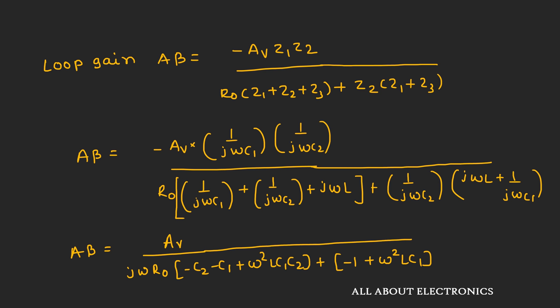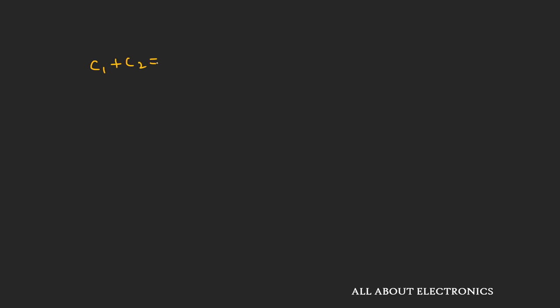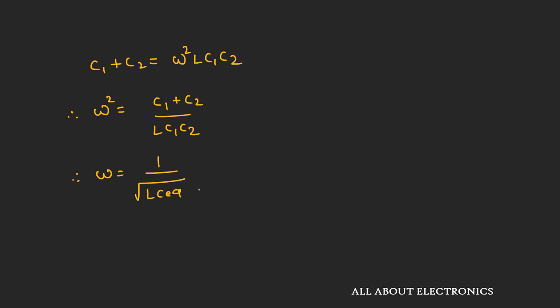To achieve zero degrees of phase shift, the imaginary term in the denominator must equal zero. This requires C1 + C2 = ω²·L·C1·C2, which gives ω² = (C1 + C2) / (L·C1·C2). Therefore, ω = 1 / √(L·Ceq), where Ceq = C1·C2 / (C1 + C2). This is the expression for the oscillation frequency of the Colpitts oscillator.